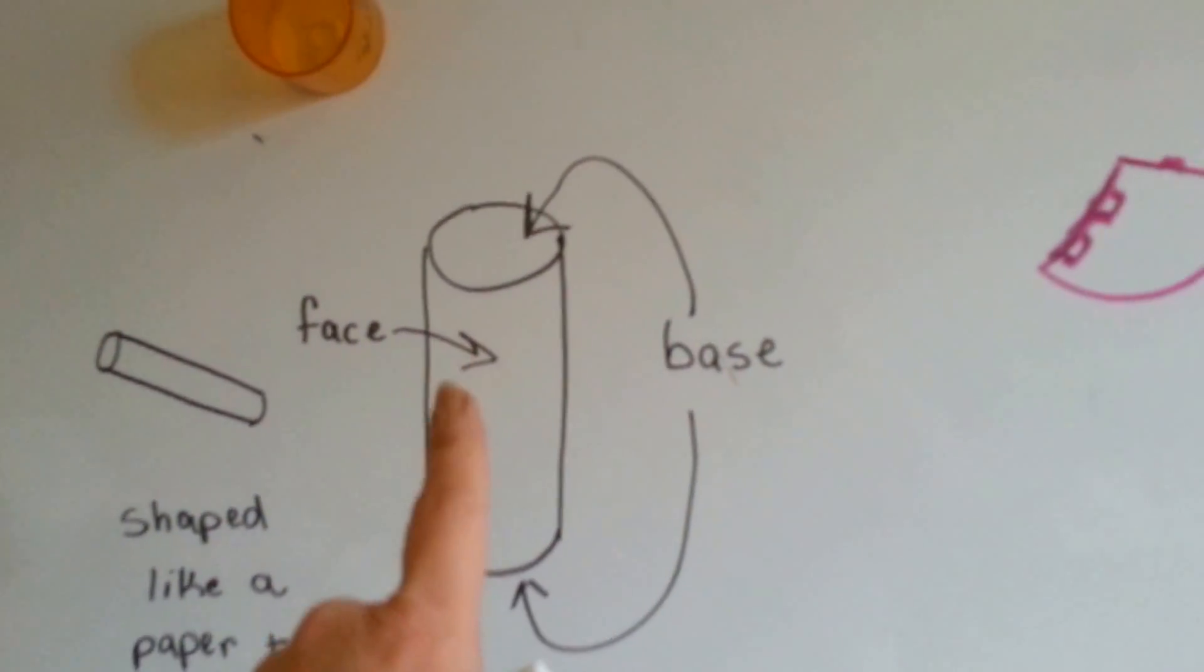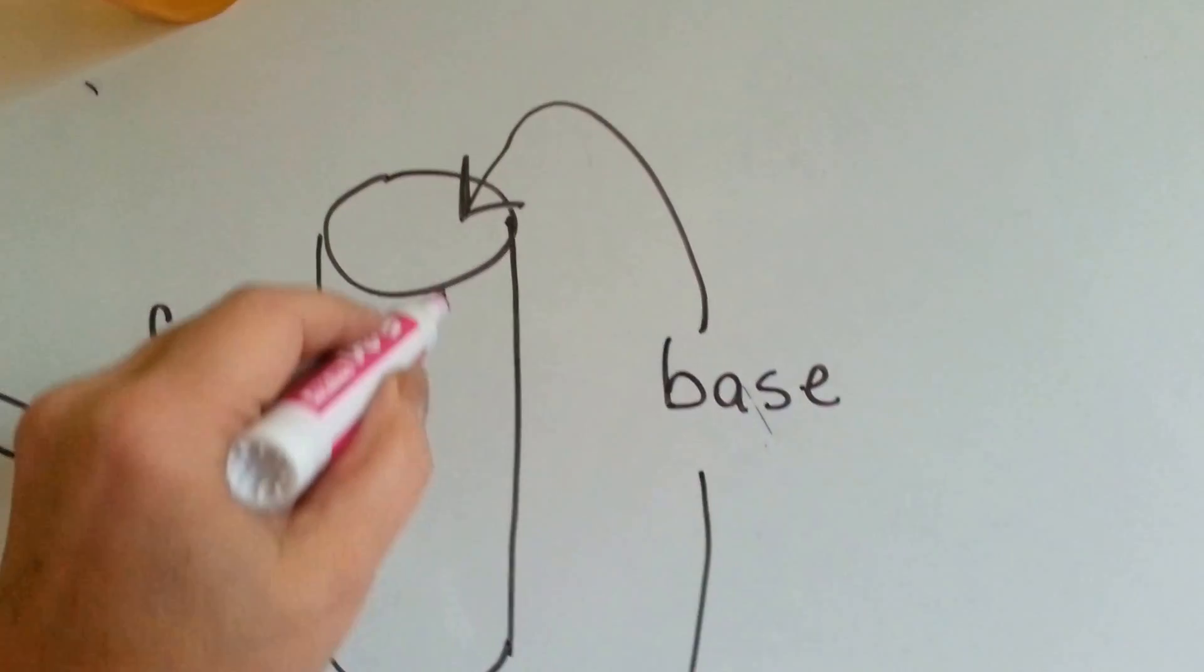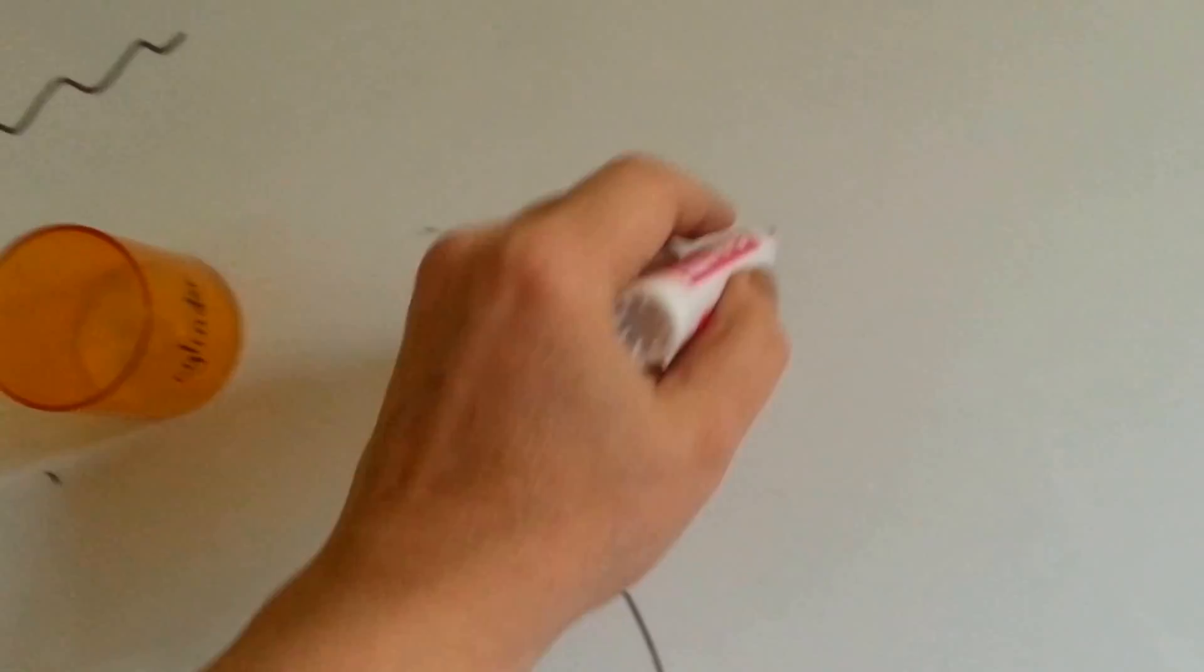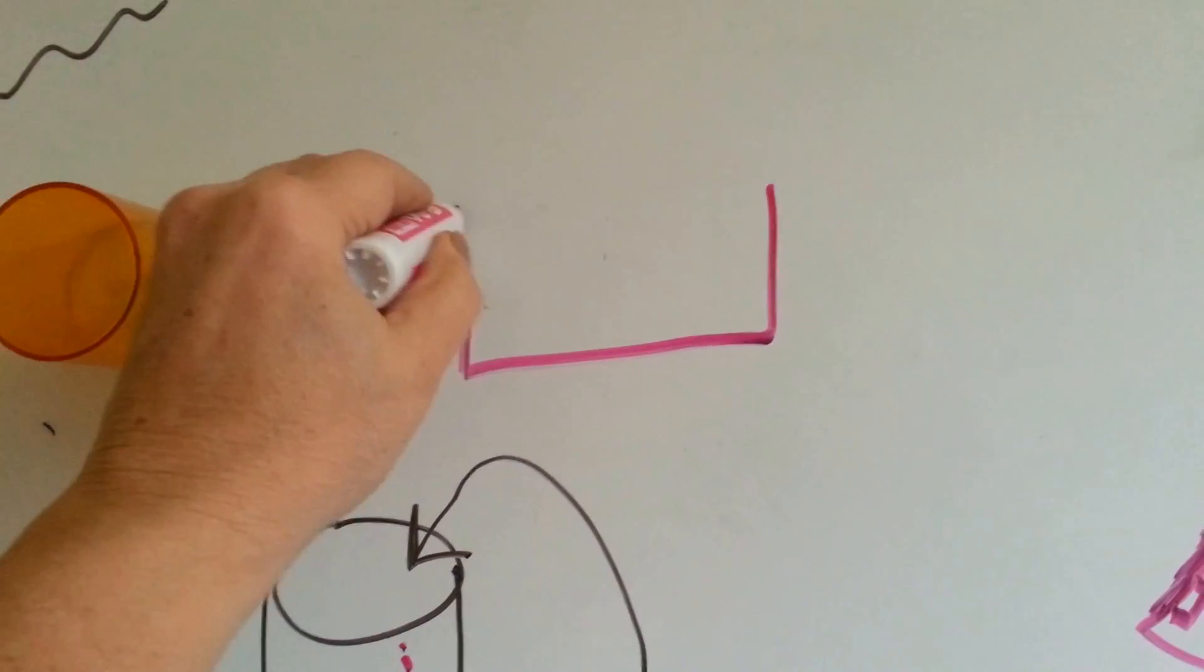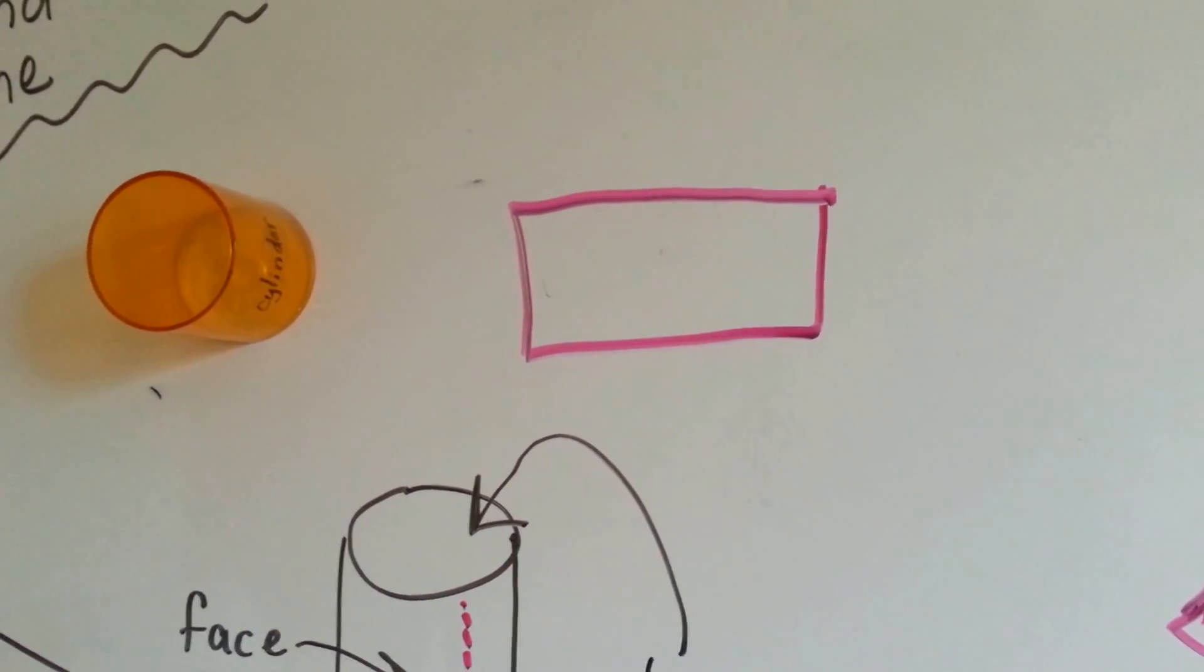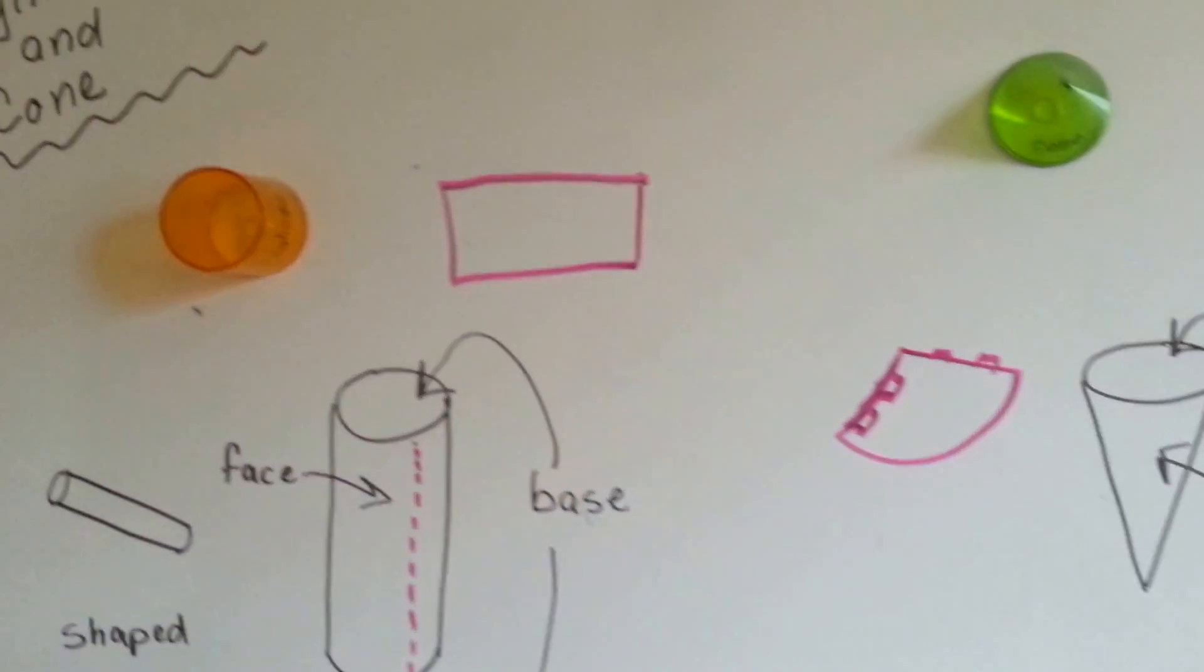Now, if you were to do that to the cylinder, it would be like the label on a vegetable can. If we just cut the label off right here, and we opened it up, it would just be a rectangle. Try taking the label off of a vegetable can and see what the label looks like. It looks like a rectangle when you open it up.